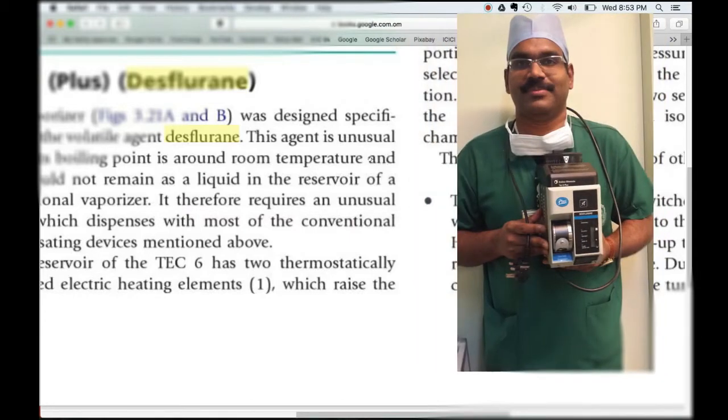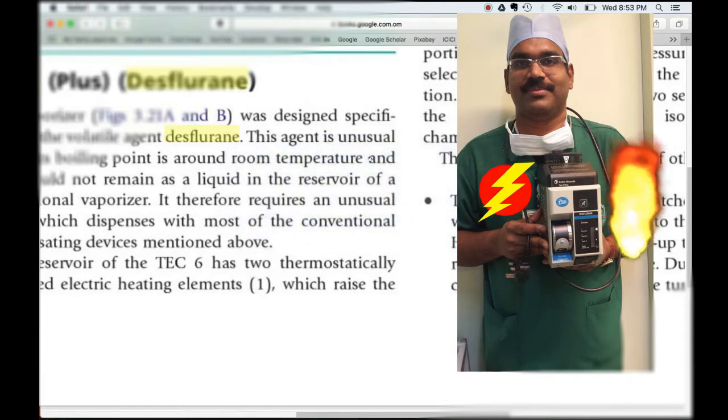We all know that the Tech 6 vaporizer for desflurane is electrically powered, a supplied heat vaporizer. The question is: why is desflurane, which is extremely volatile, heated up to be used as an anesthetic agent?